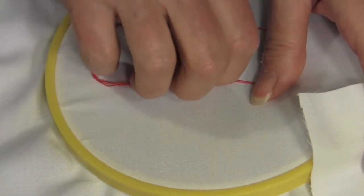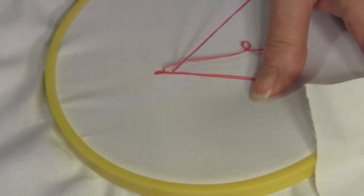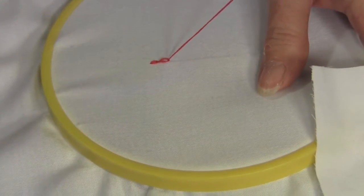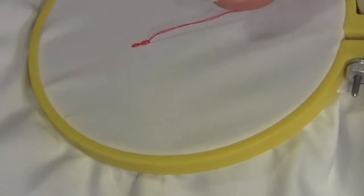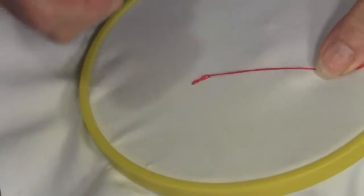Let me show you again. Go down where you last emerged, bring the point of the needle out a stitch length away, keeping the working thread under the needle point. Pull the loop flat.